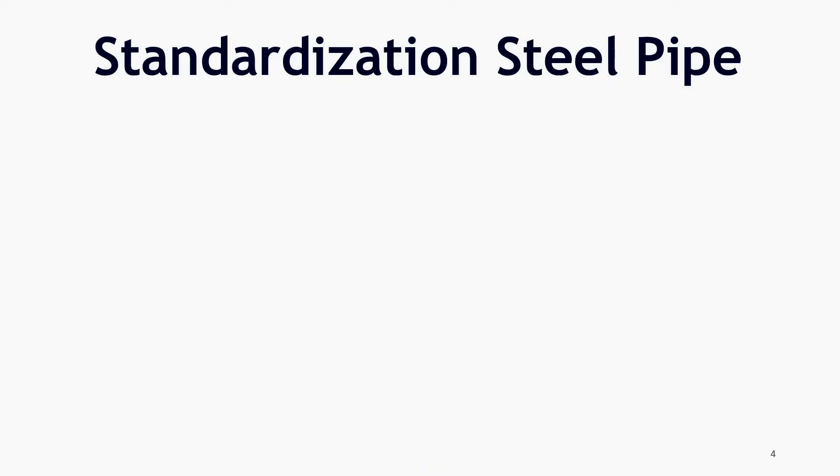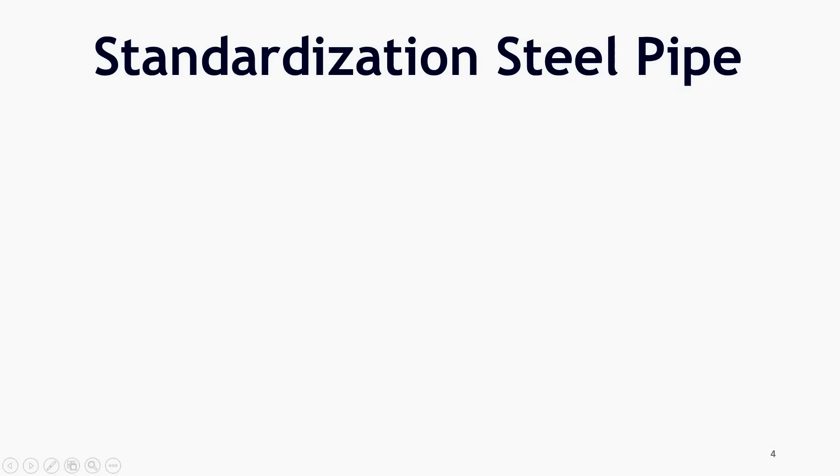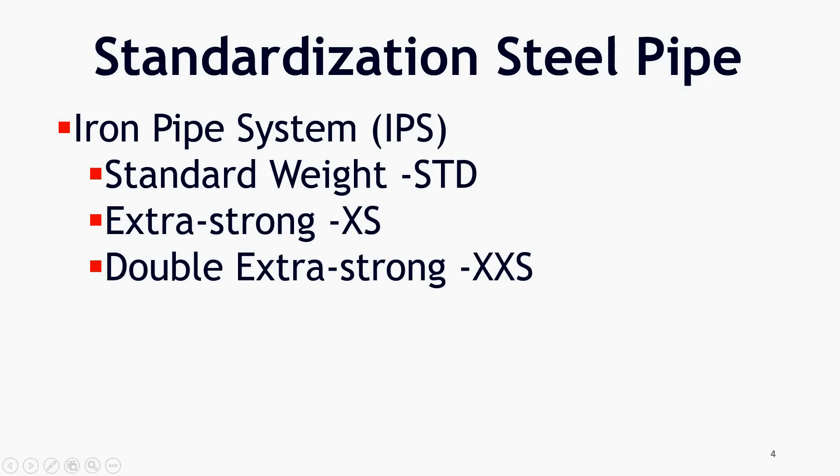Standardization of wrought steel pipe size and schedule began with the mass production era. In early days, pipes were available in only three sizes: standard weight, extra strong, and double extra strong. This system was called iron pipe size or IPS system.